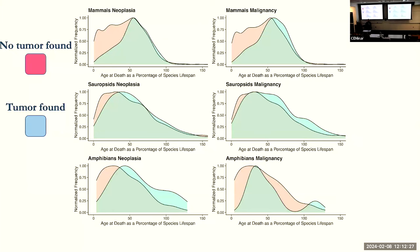If we expand this to our complete comparative oncology database, which comprises around 100,000 individuals over a couple hundred species of vertebrates in zoos, this pattern is universal across all of our zoo data. Even though there is a non-uniform distribution of lifespan extension in zoo animals, you still see that the vast majority of those tumors are found before the conclusion of their natural lifespan.